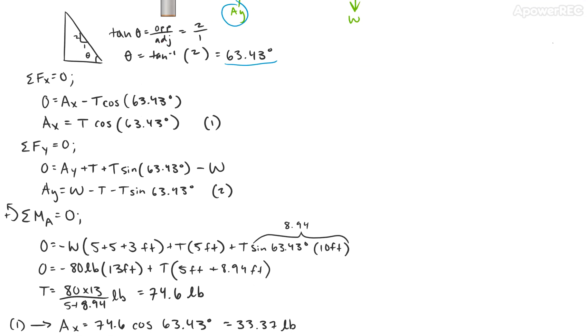Then we use our first equation of equilibrium, which is the sum of the forces in the X direction. From here, we can find that AX, our horizontal component, is equal to tension times cosine of theta.